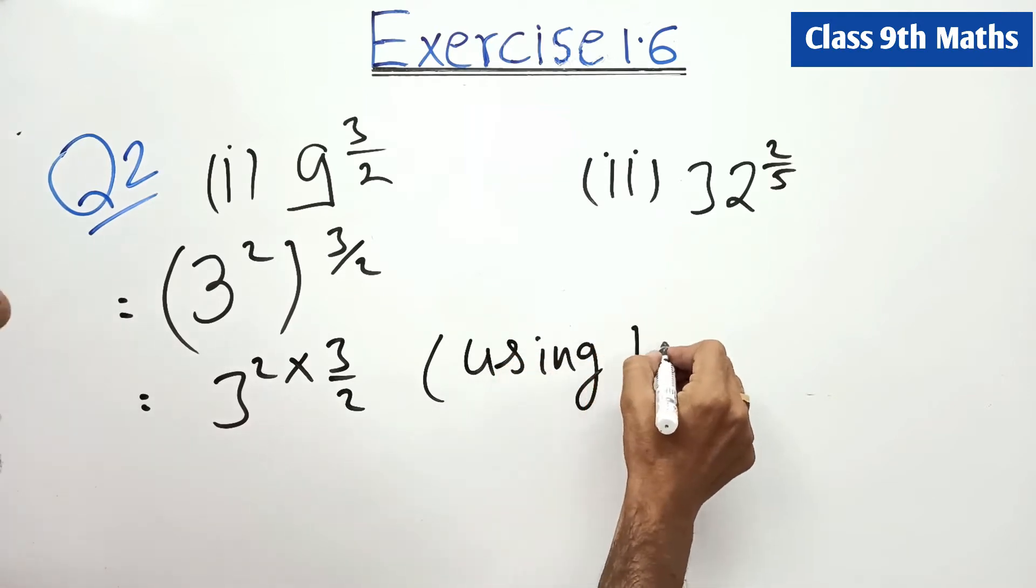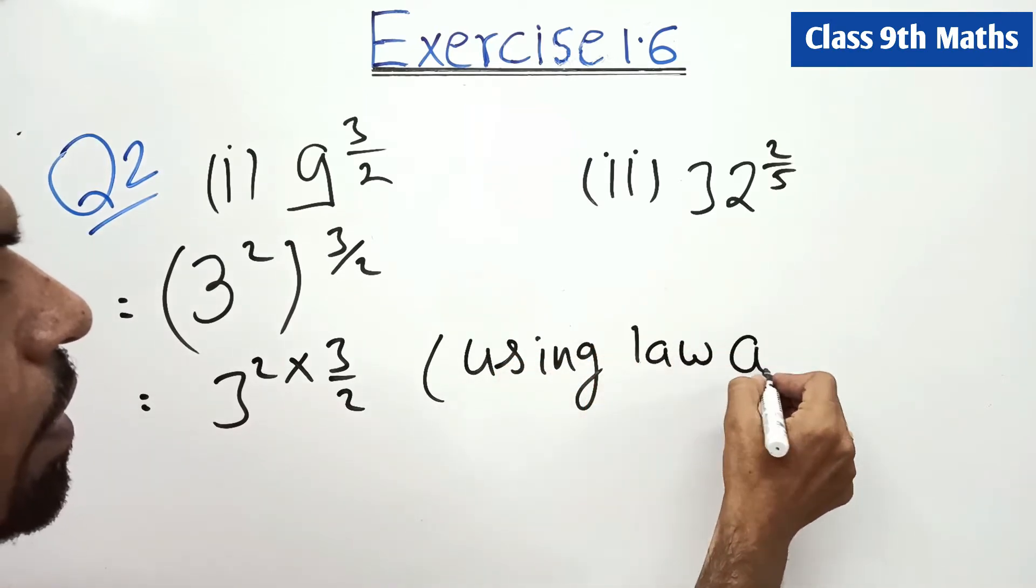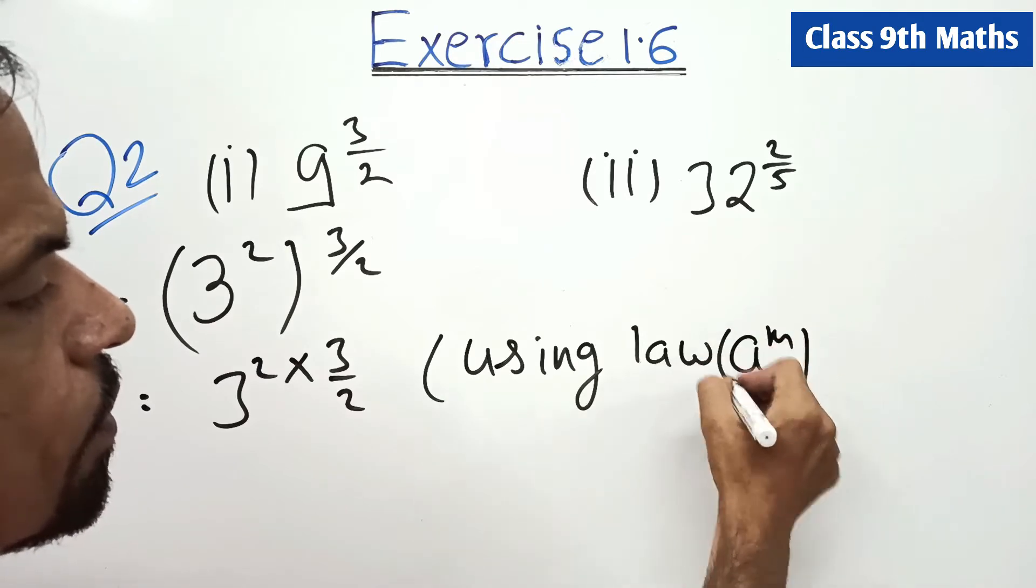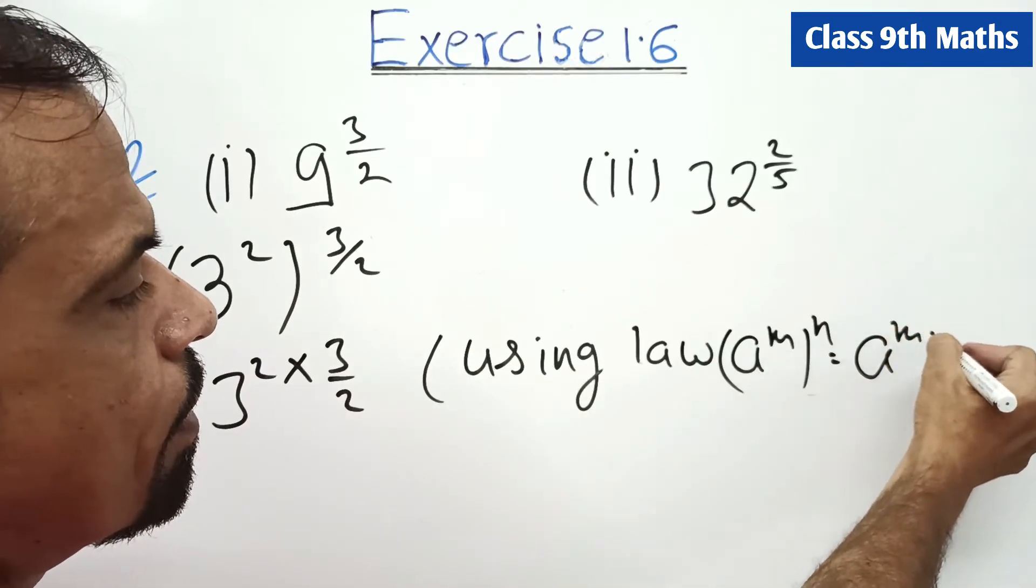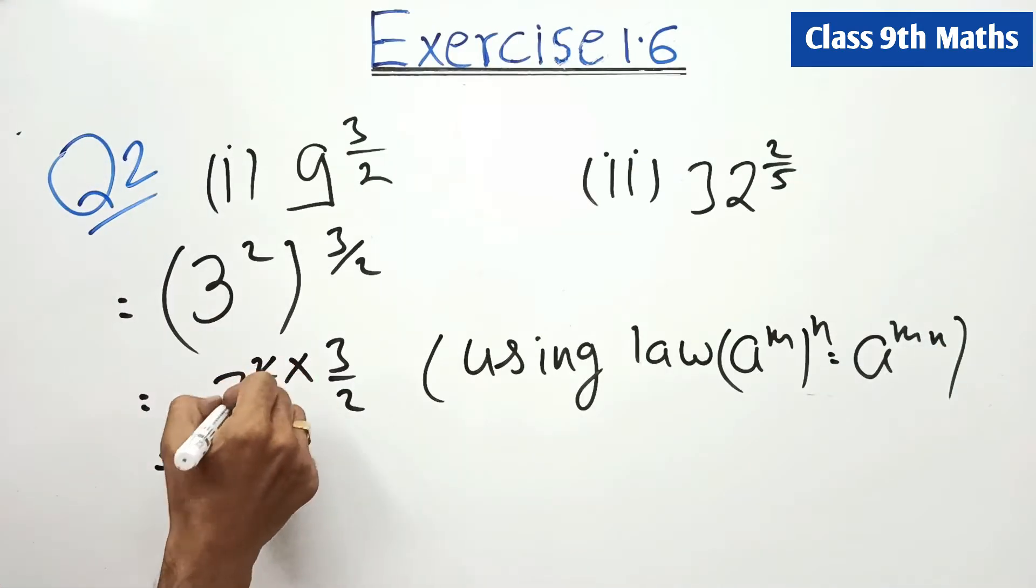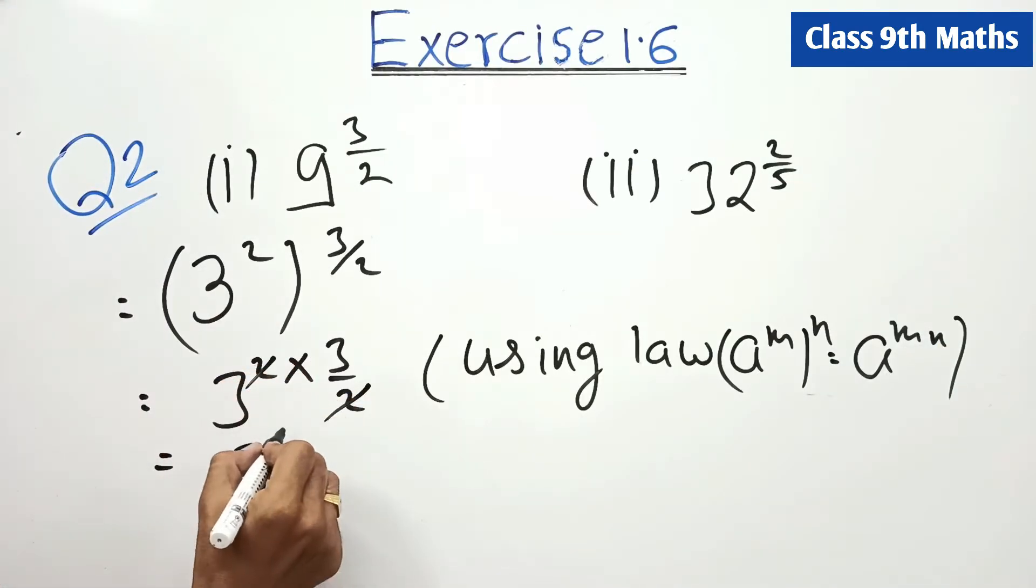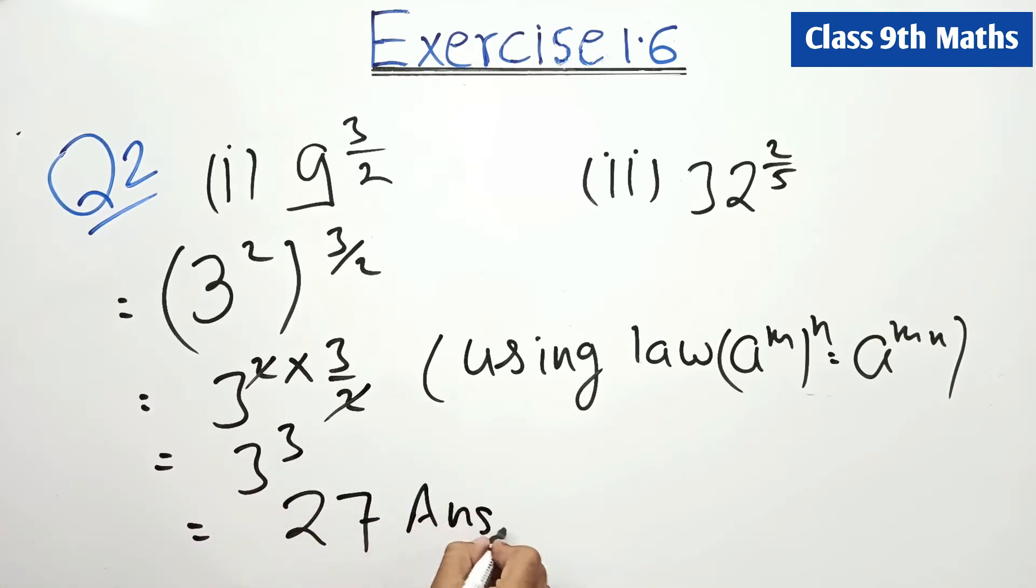Using the law a to the power m raised to the power n equals a to the power mn. So, 2 cancels, 3 cube. 3 cube means 27. So this is our answer.